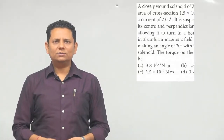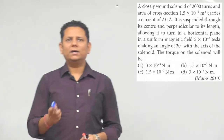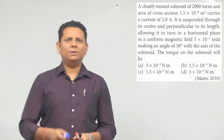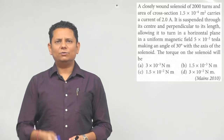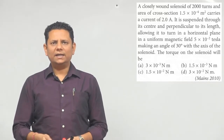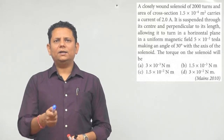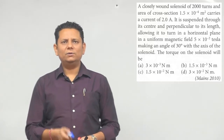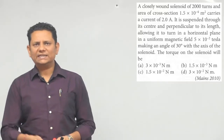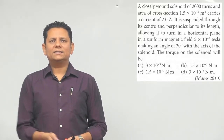The question says: a closely wound solenoid of 2000 turns and area of cross-section 1.5×10⁻⁴ m² carries a current of 2 ampere. It is suspended through its center and perpendicular to its length, allowing it to turn in a horizontal plane in a uniform magnetic field of value 5×10⁻² tesla, making an angle of 30 degrees with the axis of the solenoid.